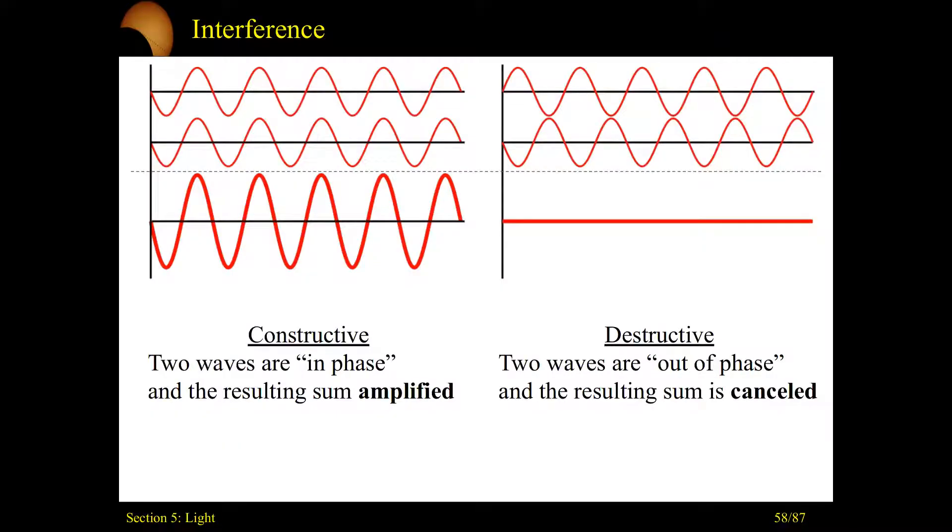And you can only get this with waves. Only waves can demonstrate this property. It's the wave going through both slits simultaneously and interfering with itself. So there's your double slit experiment. No slits. Double slit.